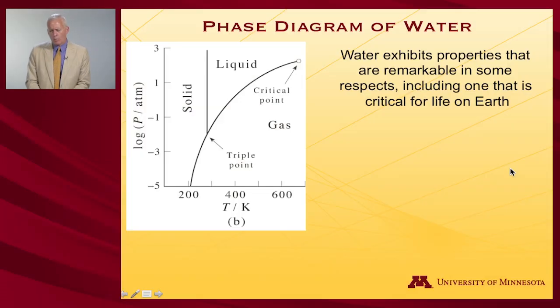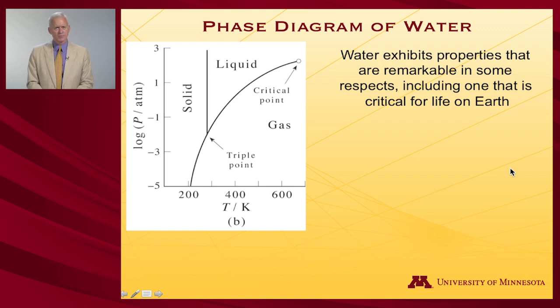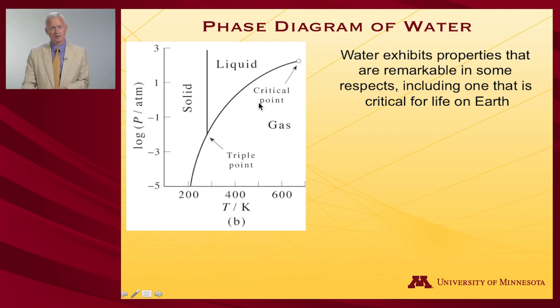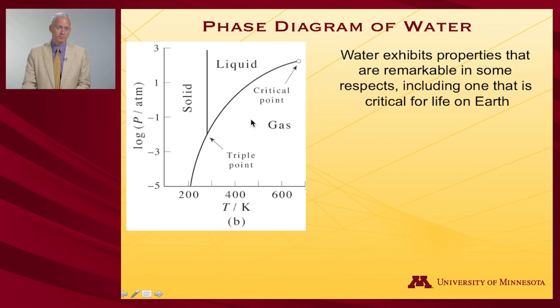Let's take an in-depth look at the phase diagram for a particularly important substance, namely water. Water exhibits properties that are quite remarkable as a chemical substance, and some of those properties are really quite critical for life on this planet. This phase diagram does not look particularly remarkable yet — it seems to resemble one we looked at for benzene in the past video.